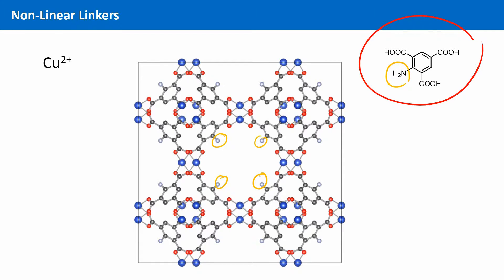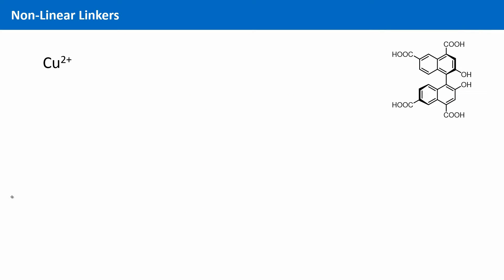Adding functional groups to the organic SBU ahead of the preparation of the MOF is a great way to alter the MOF structure and to create a vast variety of different reactivities inside a MOF. Why? Because the methods of organic chemistry allow to synthesize an almost infinite number of different linker molecules. Concerning the complexity of the organic SBUs, the sky is the limit.